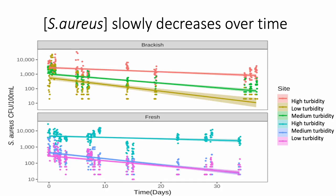Here's my overall data. I have time in days on the x-axis and staph concentration on the y-axis, with brackish and fresh water shown separately. The purple and brown lines are my low turbidity, the blue and green are my medium turbidity, and the blue and red are my high turbidities. We can see that concentration decreases over time and is significantly different across turbidity levels.